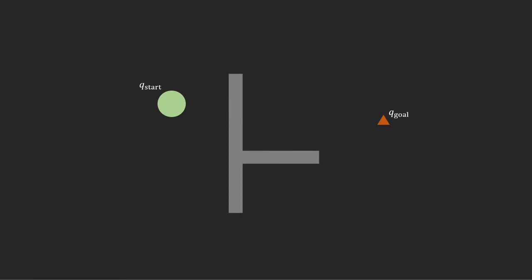So how does it actually look? The robot starts on the left at the Q start position. Then it plots an M line towards the goal — this is the main difference between the Bug 1 and the Bug 2 algorithm. Then it goes towards the goal and creates a hit point when it hits the obstacle. It follows the boundary until it reaches the M line, then immediately creates a lead point and from that lead point it goes towards the goal.